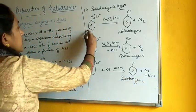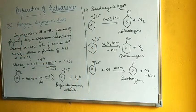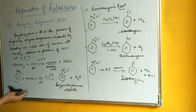In the Sandmeyer reaction, when benzene diazonium chloride is treated with cuprous chloride or cuprous bromide in presence of HCl or HBr respectively, we get chlorobenzene and bromobenzene respectively.